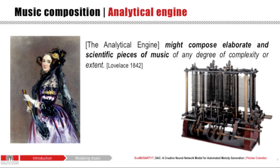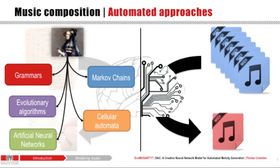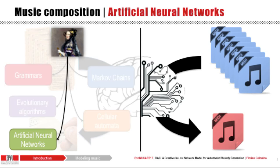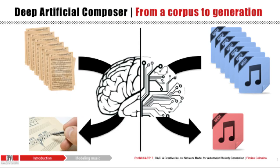The idea of formalizing music for algorithmic composition goes back as far as the 19th century with Ada Lovelace. In her notes, she suggested that if we can formalize music so that the analytical engine can operate on it, it might compose elaborate and scientific pieces of music. Many computational fields have been explored to follow Ada Lovelace's thoughts, and here we present a model belonging to the artificial neural network domain: the Deep Artificial Composer.